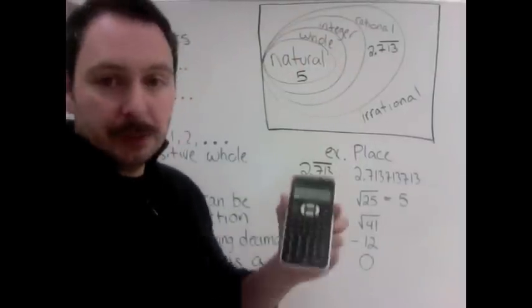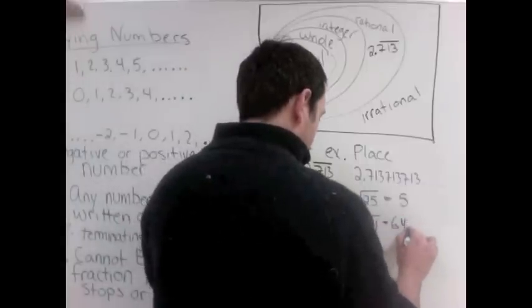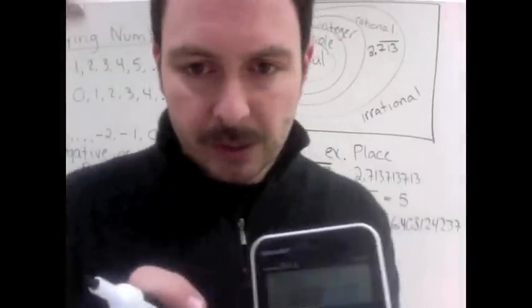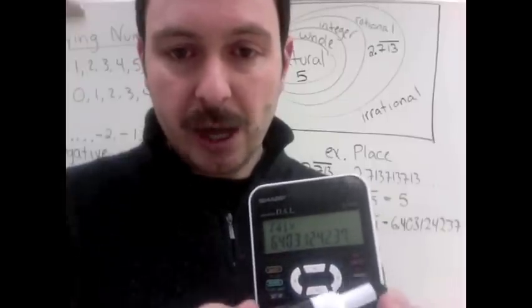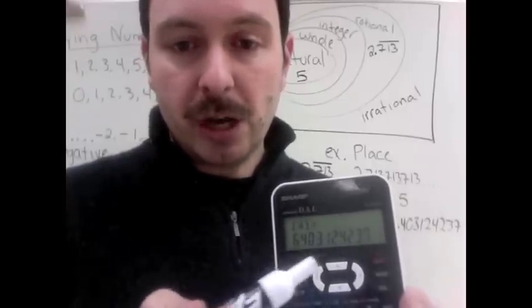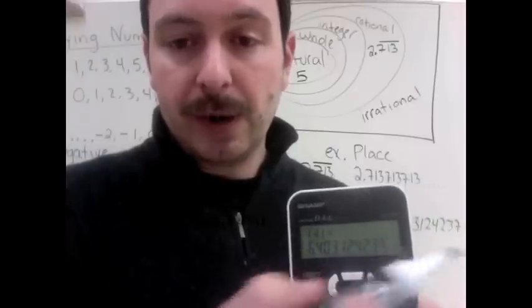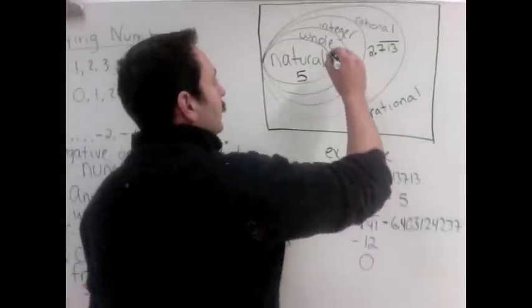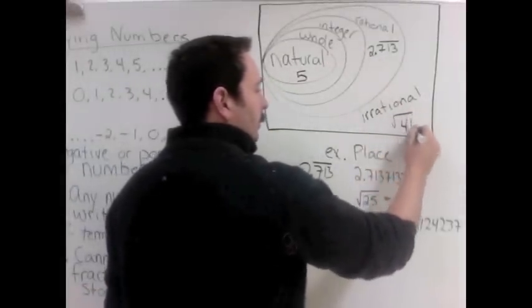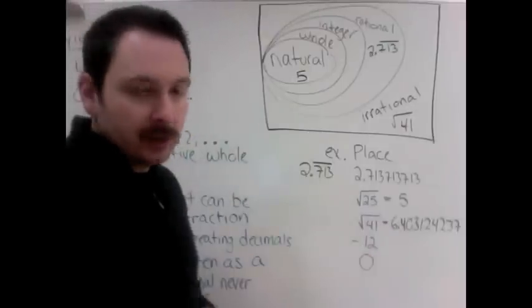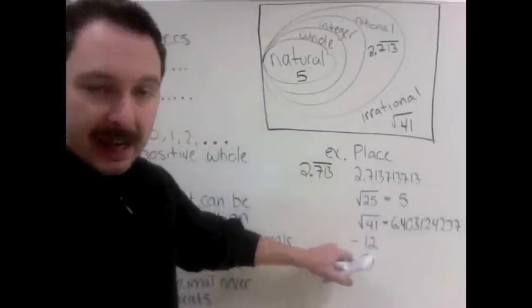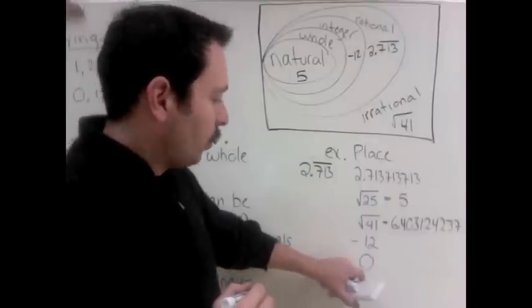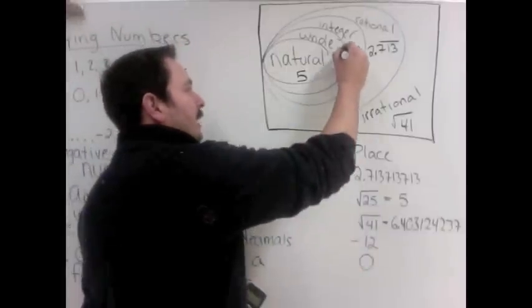Square root of 41, if you put that in your calculator, would be 6.403124237. So it looks like it terminated, the calculator stopped. Well it didn't stop, it just ran out of space. This number is not repeating, it's not ending. The calculator ran out of space, so it's going to just keep going. It is irrational. Negative 12. Well, 12 is a natural and a whole, but it's negative, so it's an integer. And last, 0. Well, 0 is whole, 0 is an integer, but we put it in its greatest set, so 0 is whole.